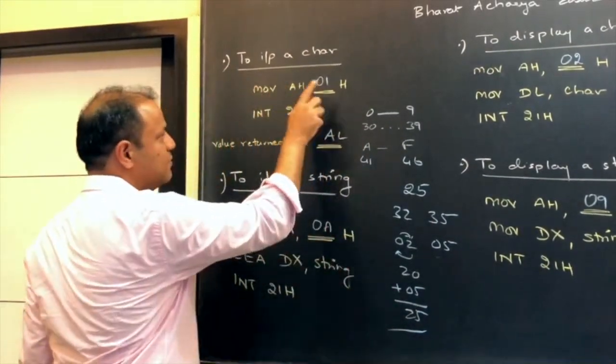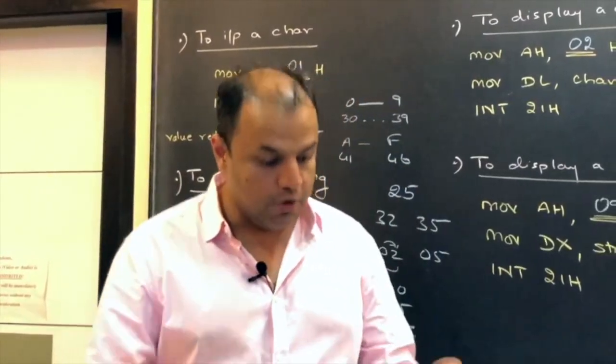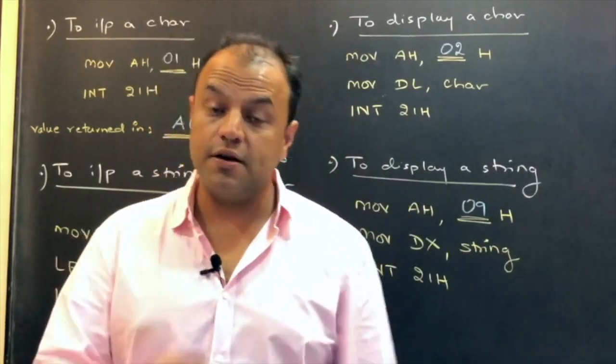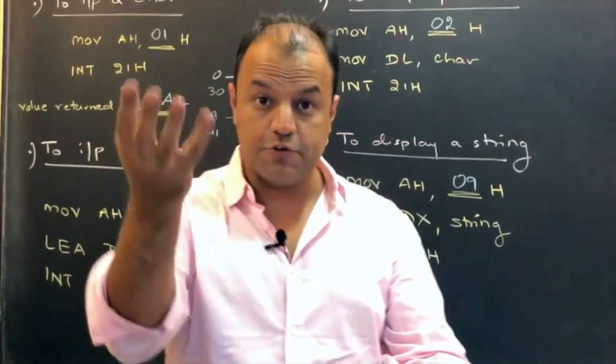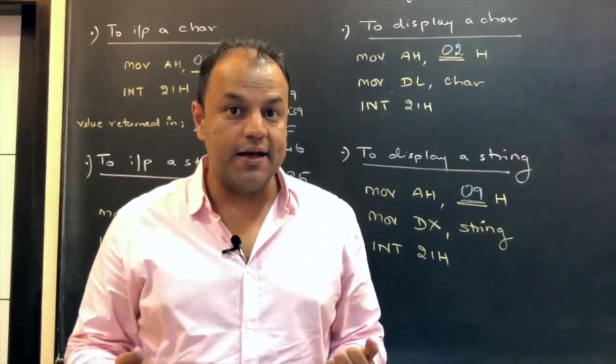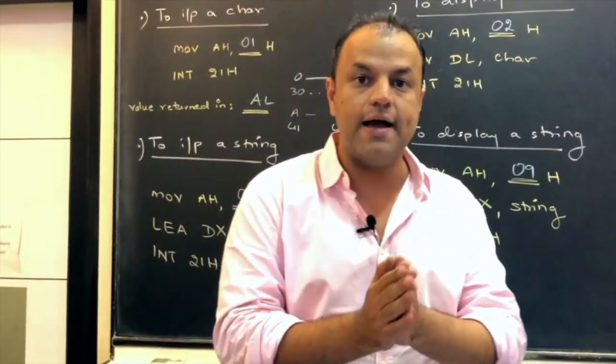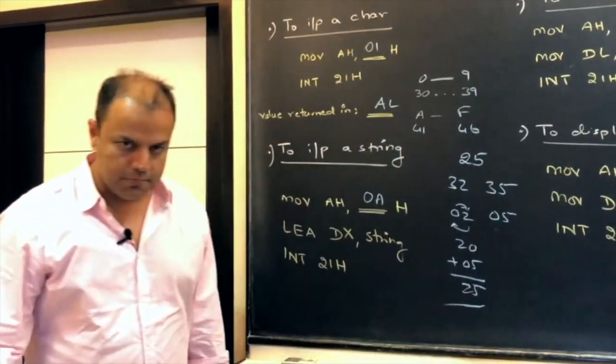Did you understand how to take a single number from the user? First, you do move AH, 01, INT 21H. Check out AL register. AL will get the ASCII value. Compare it with 39. If it's up to 39, subtract 30. If it's more than 39, subtract 37 because that means it's an alphabet. So, you'll get 41 to 46. So, subtract 37. When you do that, you'll get the alphabet. Now, if you're taking an 8-bit value, you'll do this twice. Then the higher part, you'll rotate four times and then add it to the lower one. That's when you'll get your 8-bit number. This is how you accept a single input from the user.